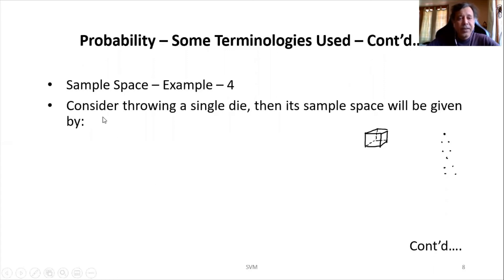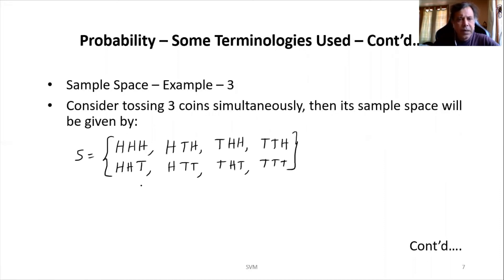So now in this example, we are considering throwing a single die. Then what will be the sample space? As we have spoken, since it has got six faces and each face will have a number of dots starting from one to six, our sample space in this case will be either 1, 2, 3, 4, 5, and 6. That means in this case, the number of possible outcomes in the sample space will be 6.